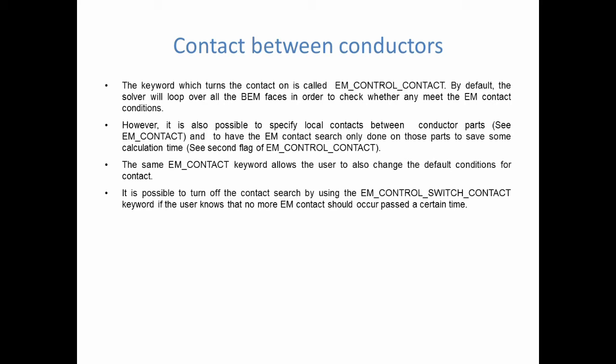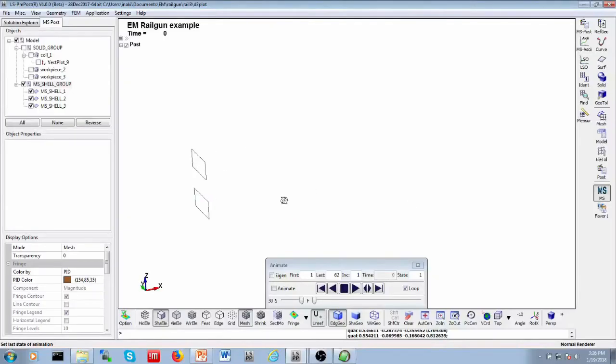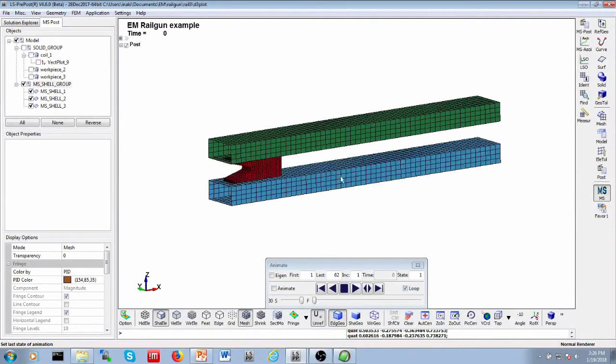In the same local contact keyword definition you can change the local conditions for contact — those tolerance values or criteria. You can check that in the keyword manual. If the EM contact only happens during a specific part of the run, you can turn it on and off using the keyword EM control switch contact. This is the railgun input deck example which you can find on the Dyna examples website, like all the others we have seen in the previous videos.